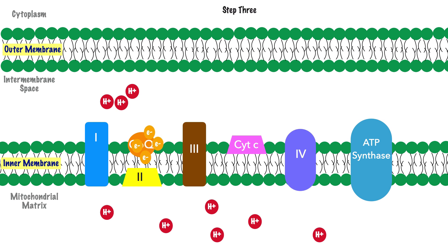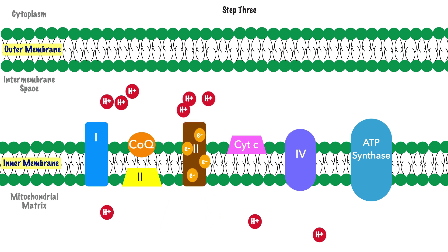For step 3, the electrons transferred to coenzyme Q are passed along to Complex 3. As they reach Complex 3, it becomes highly charged and functions as a proton pump much like Complex 1 did, moving protons from the mitochondrial matrix to the intermembrane space, continuing to build the proton gradient.